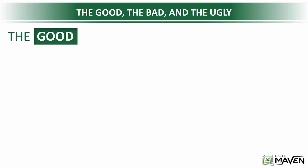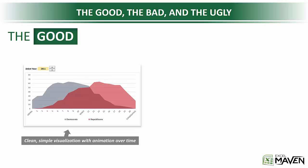First, let's start with the good. Here we have a nice overlapping area chart. It shows political polarization in the US. It also has an option to change the date range to show animations over time. Really nice, really simple, really effective.